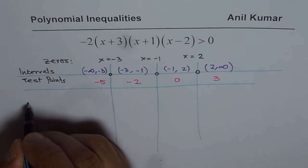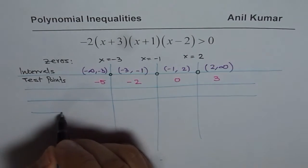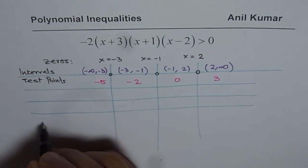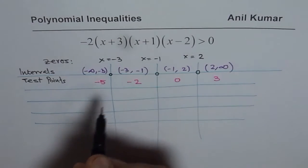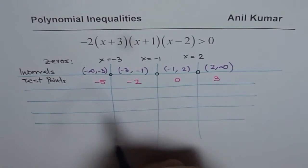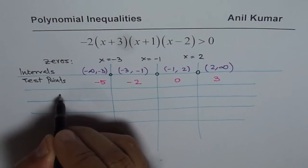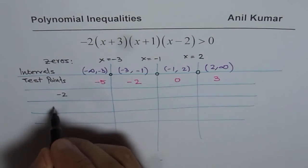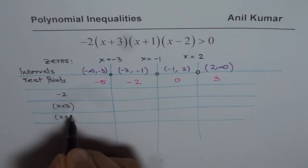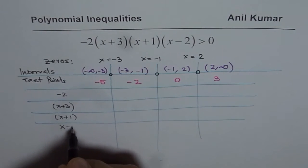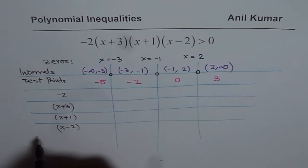Now what do we need to test? We will test each factor whether it is positive or negative. That is the whole idea. So let us write down these factors one by one. Minus 2 is our first factor, then we have x plus 3, then x plus 1, and then x minus 2. So these are the four factors for us.